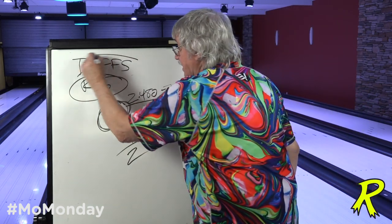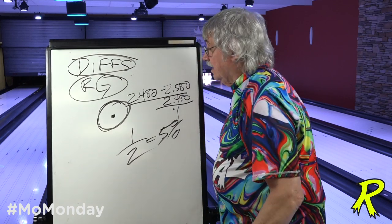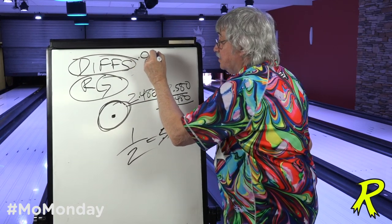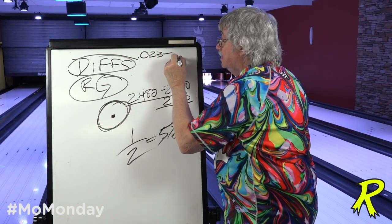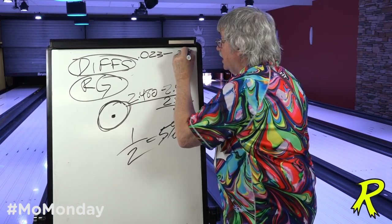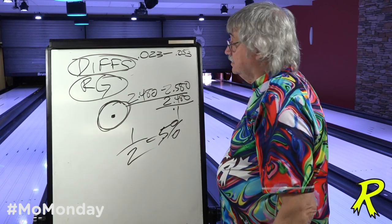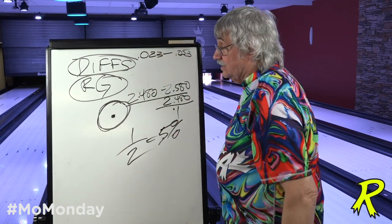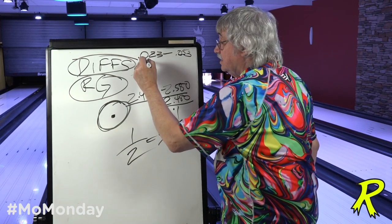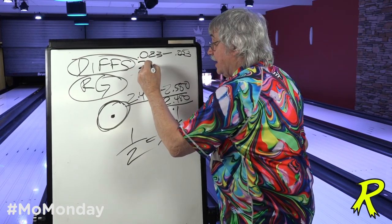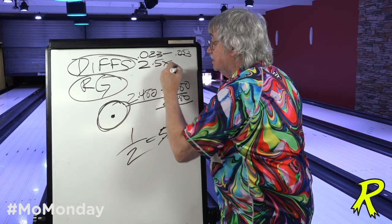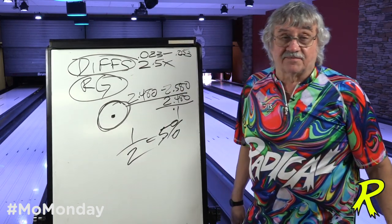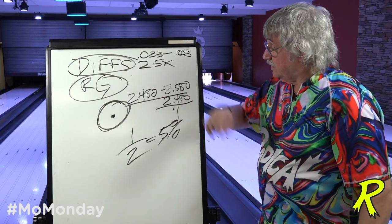But now let's talk about diffs. Effective bowling balls undrilled have total diffs between 0.23 and 0.53 under the new rules. So in this range, I can change the diffs and multiply it by two and a half times — because the ball with a 0.53 diff is two and a half times more diff than the one with 0.23.